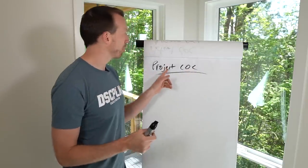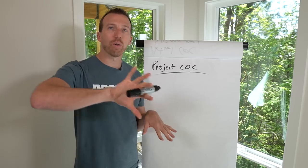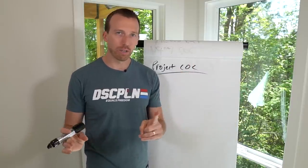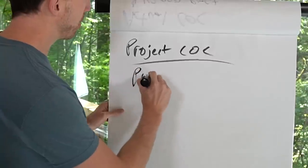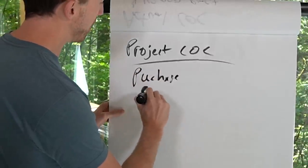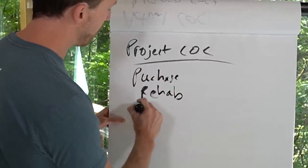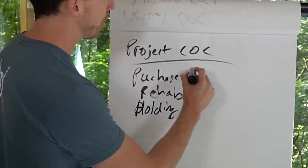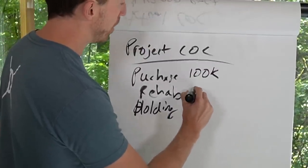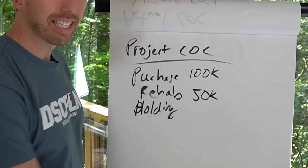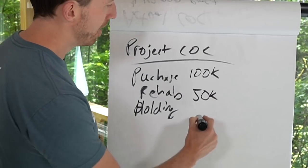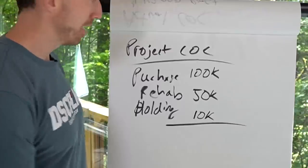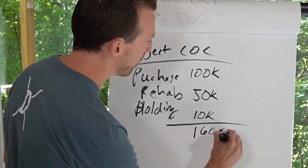In reality, my out-of-pocket is only $20,000 on a $100,000 purchase. But for project cash on cash return, I want to ignore my out-of-pocket and look at all costs into the project. Let's say the purchase price is $100,000, rehab costs $50,000, and miscellaneous holding costs like utilities and taxes are another $10,000. That means your total project cost is $160,000.